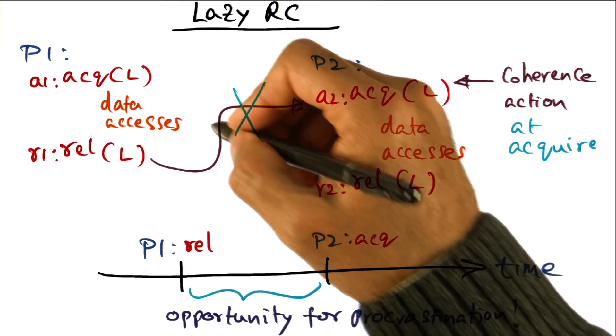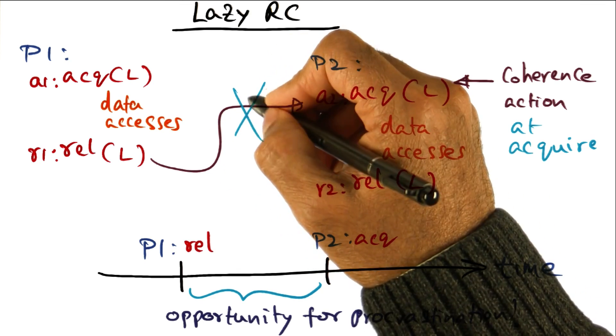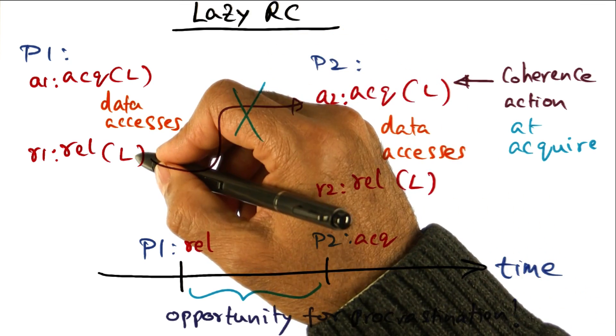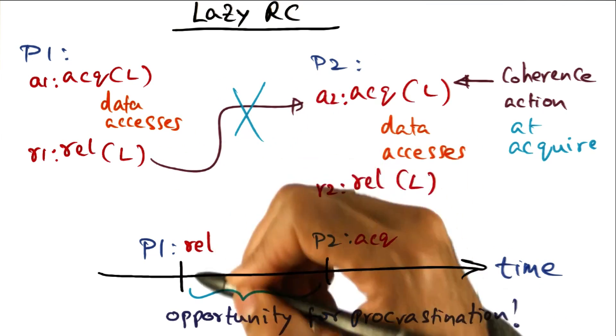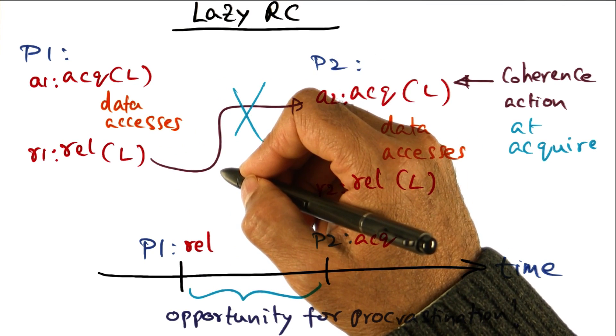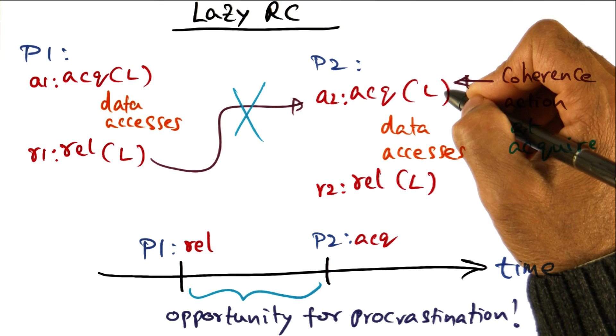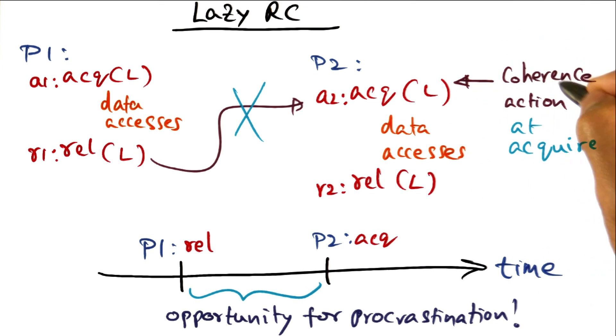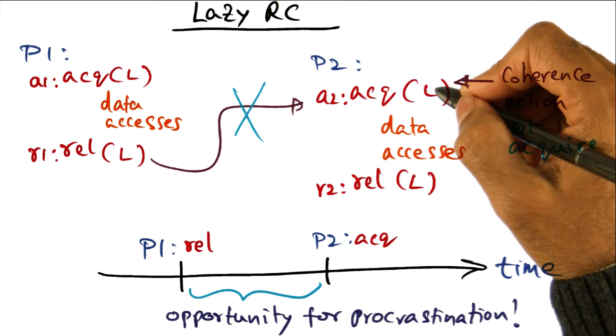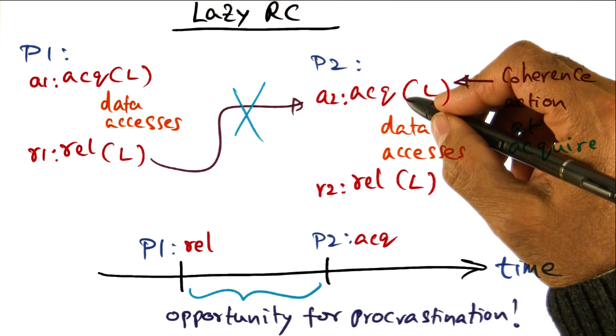The idea is that rather than performing all the coherence actions at the point of release, don't do it. Procrastinate. Wait till the acquire actually happens. At the point of acquire, take all the coherence actions before allowing this acquire to succeed.